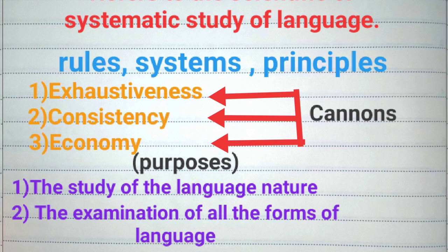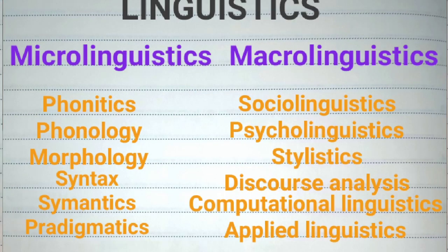Linguistics has two main purposes. The first one is the study of language nature — it tries to establish a theory and describes language in the light of that theory. The second purpose is the examination of all the forms of language to seek a scientific understanding of the ways in which it is organized to fulfill the needs it serves and the function it performs in human life.